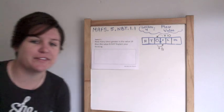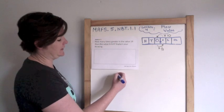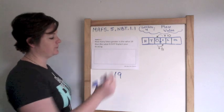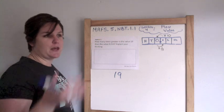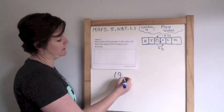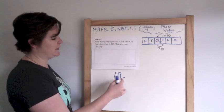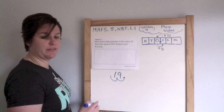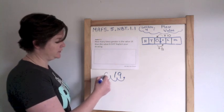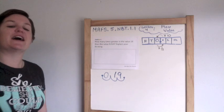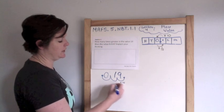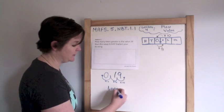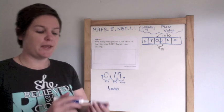Our last example: how many times greater is the value of 19 than the value of 19 thousandths? We need to move the decimal point in 19 — which is invisible but is after the 9 — over to get 19 thousandths. That gives us 1.9, then 0.19, then 0.019. We moved it times ten, times ten, times ten, so nineteen is one thousand times greater than nineteen thousandths.